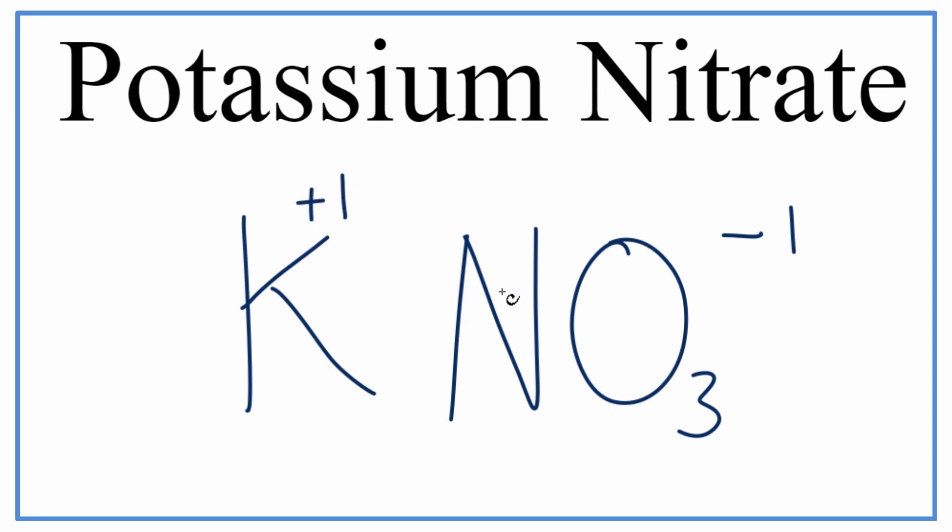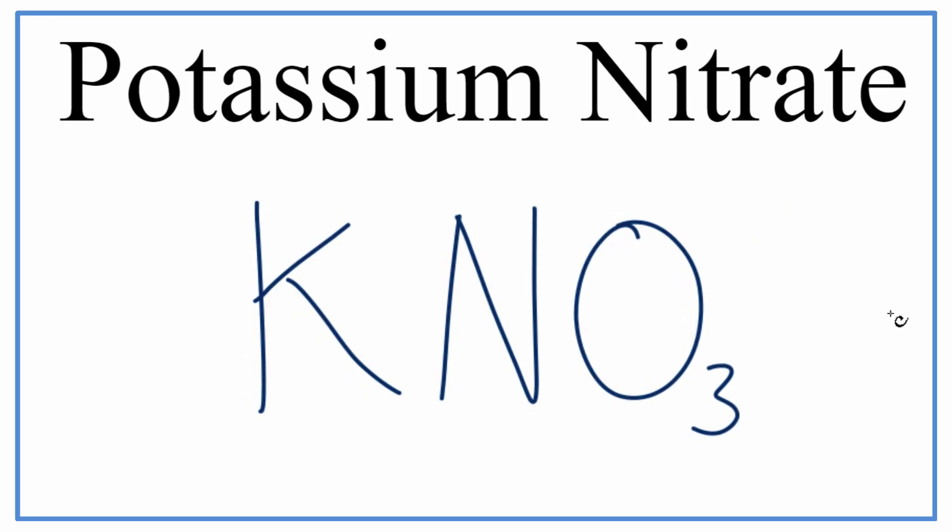When we look at this compound, because it's a metal and some non-metals, that means it's ionic. And when it's ionic, we need to look at the charge and make sure the net charge is 0. So here we have a plus 1 and a minus 1, and those will balance out to 0. So that makes this the correct formula for potassium nitrate.